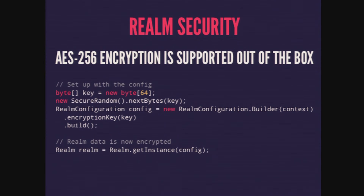With security being a huge concern these days, Realm supports AES-256 encryption out of the box. All you have to do is provide a key, and when you build your Realm instance you set the encryption key in the configuration. When you call realm.getInstance(), the entire database is encrypted. If you were to pull that file off the device, it's garbled — you can't tell what's in it. The key can come from an API endpoint or some type of hash that nobody could access even if they decompile your app.